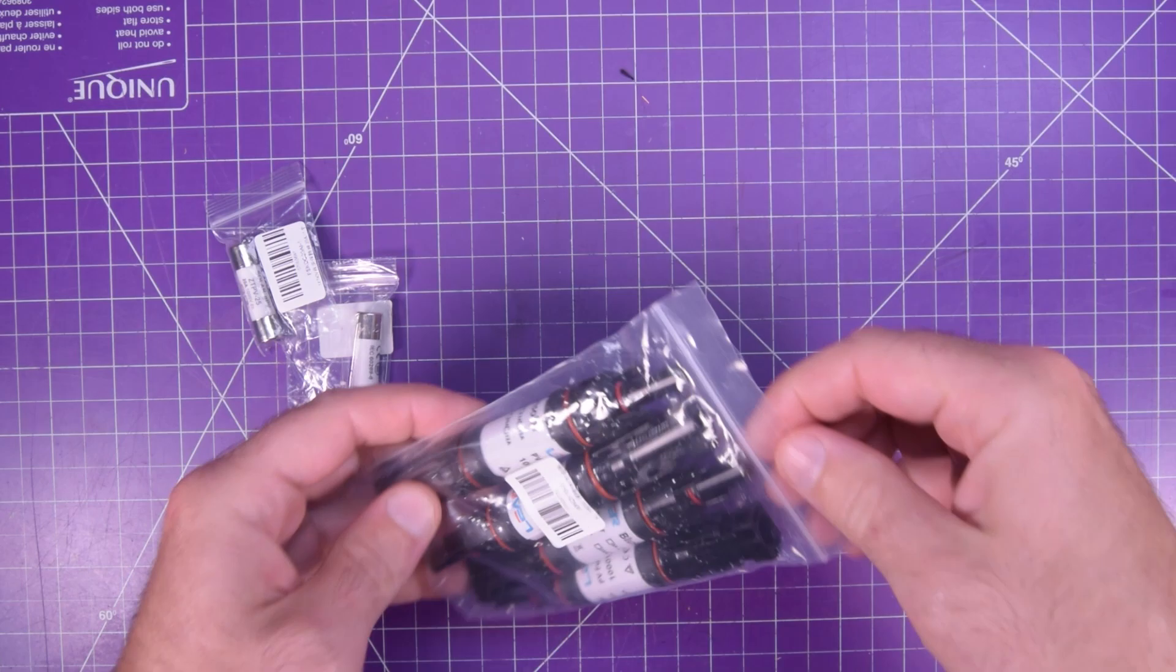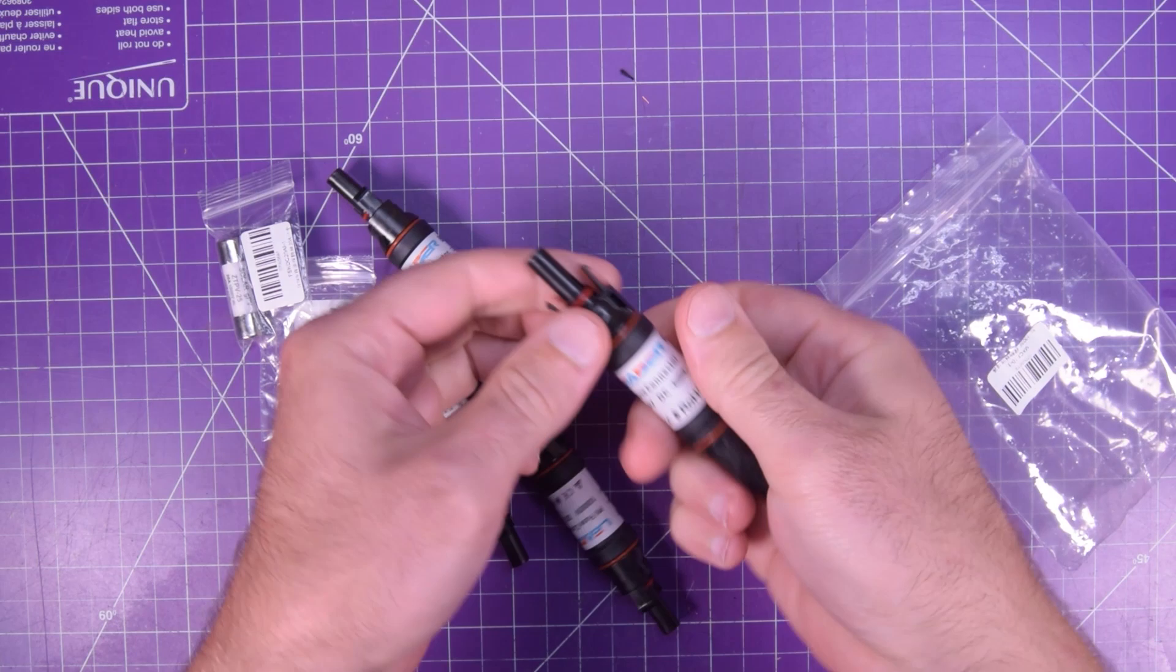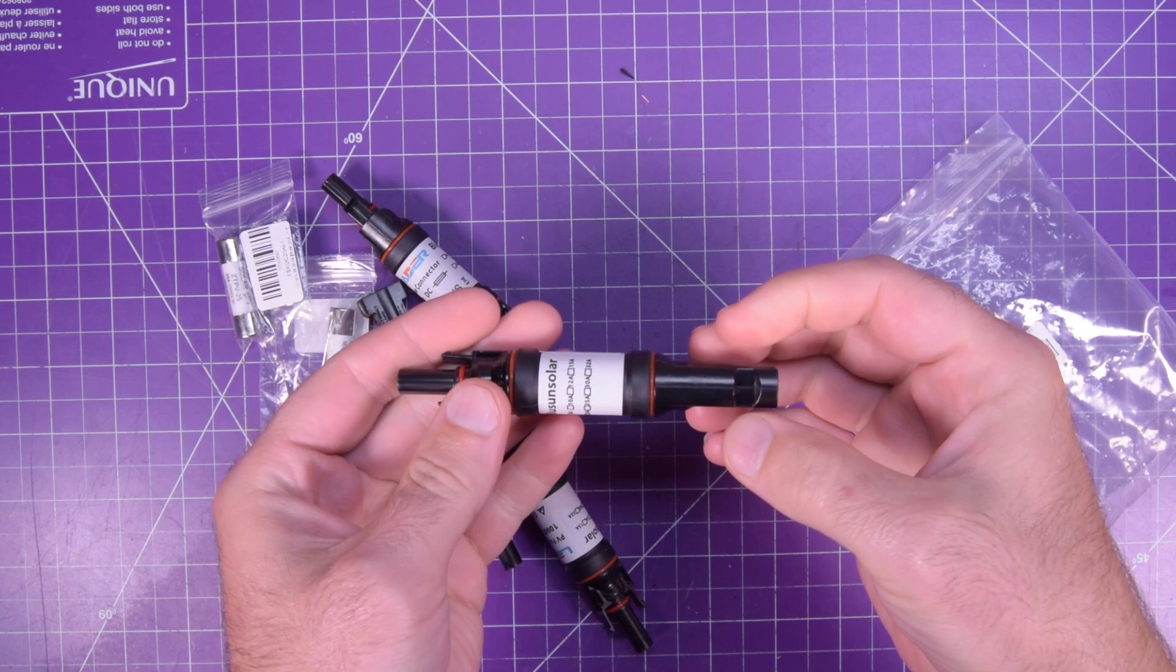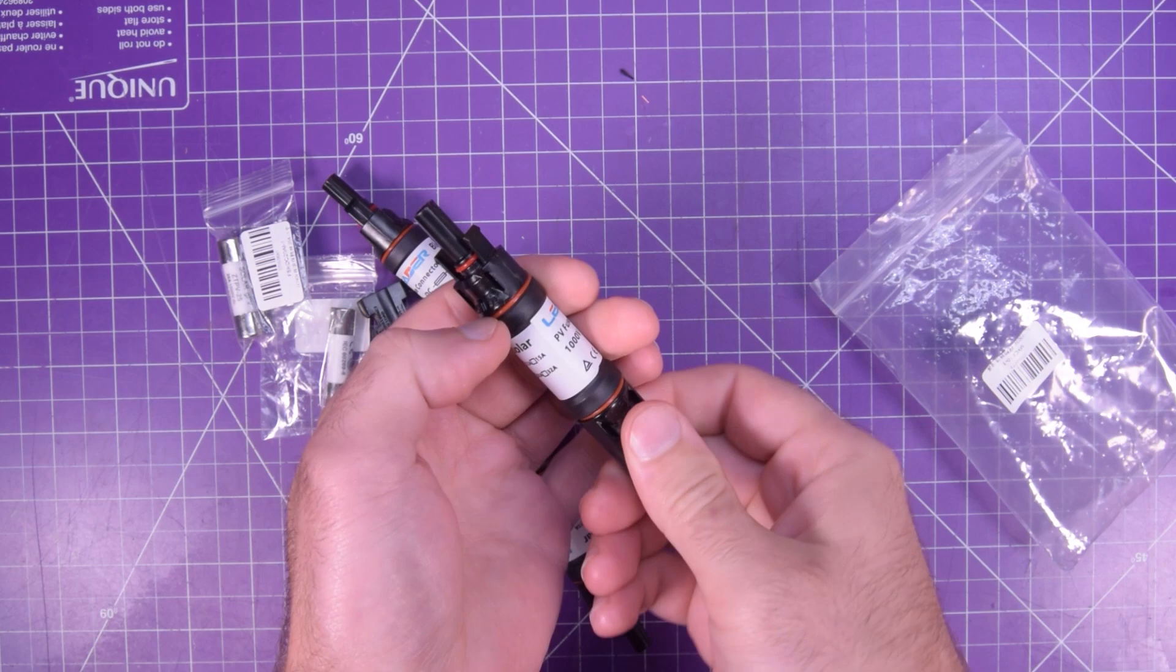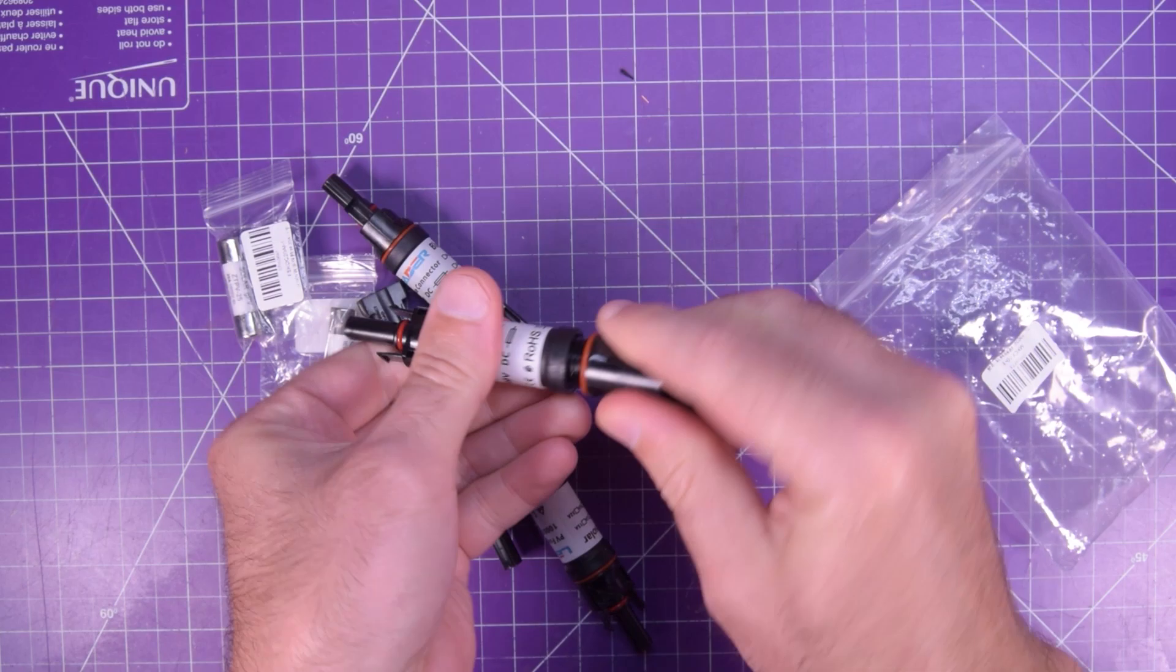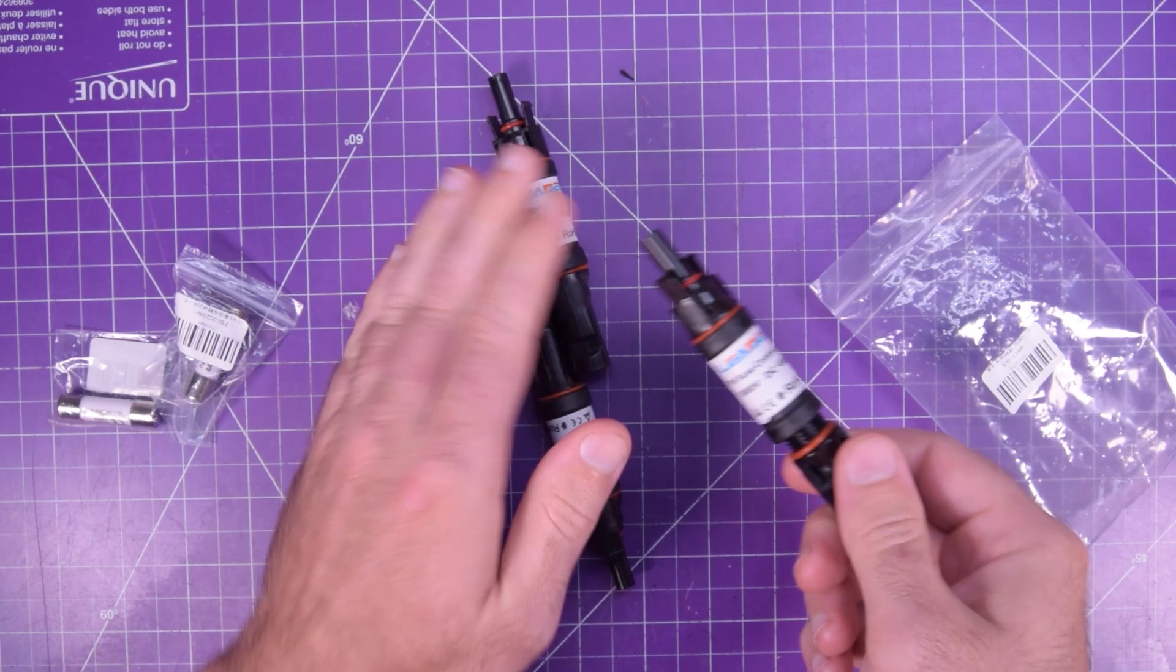Let's take a closer look at these. Well, these are MC4 connector fuse holders. Now, they're supposed to be waterproof. Although that is debatable because they have these O-rings here on them, but they don't have much squish to them. But anyways, when I ordered these, these came without the fuses in them. So there's four. But they do include the fuses.